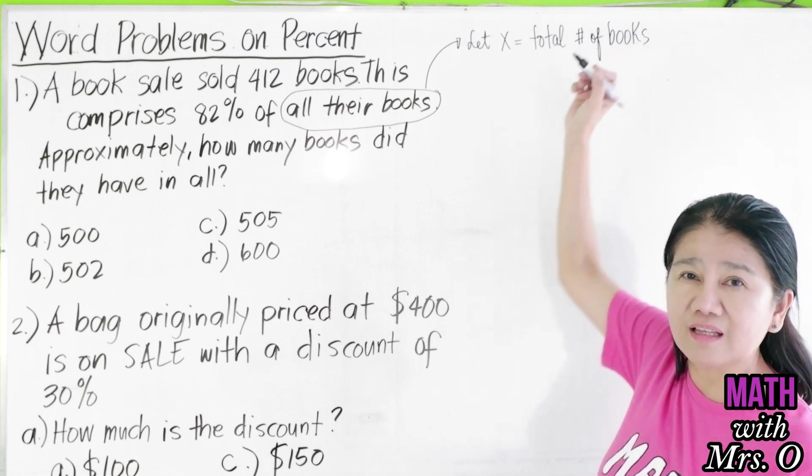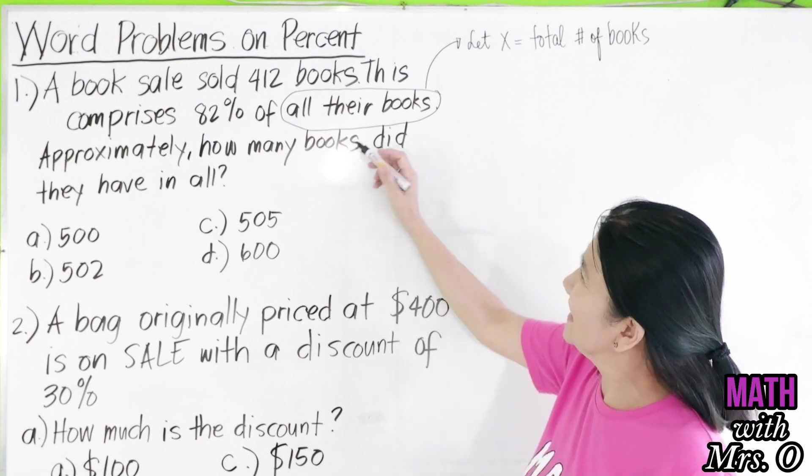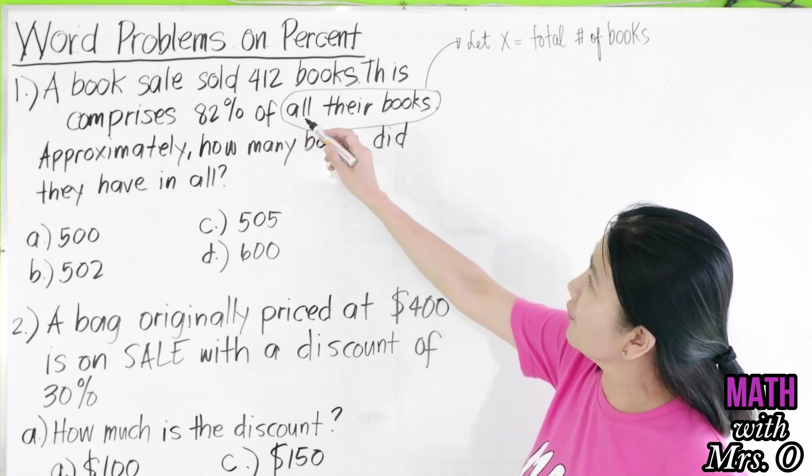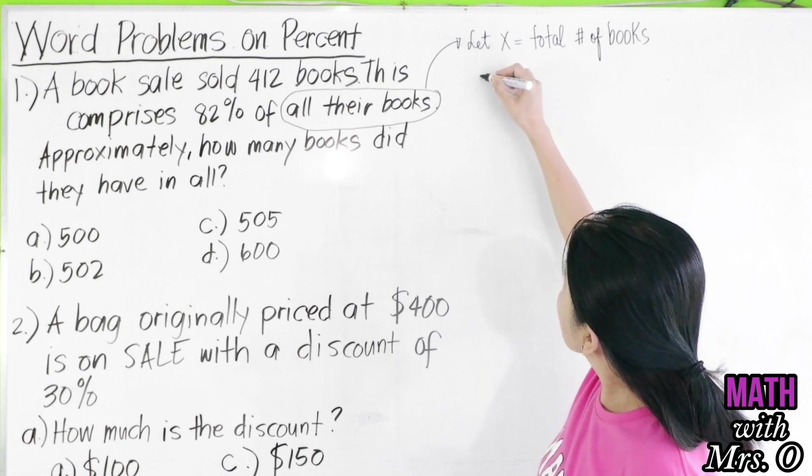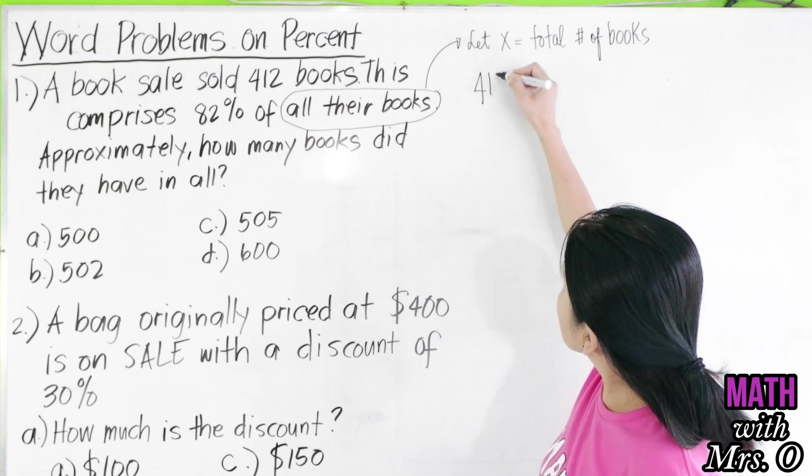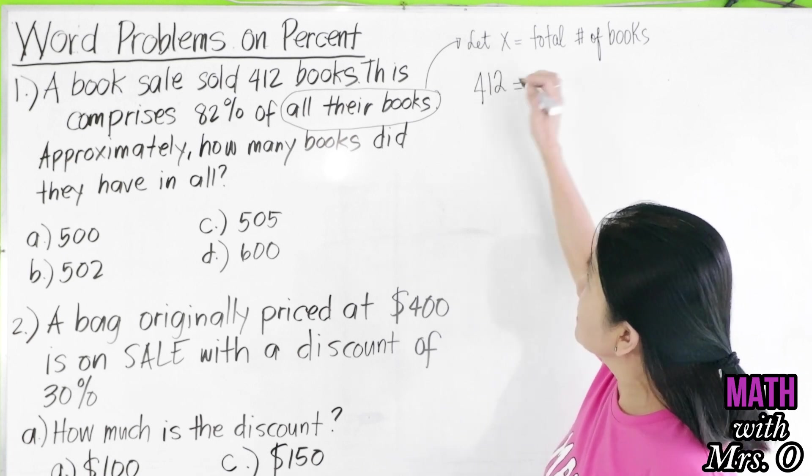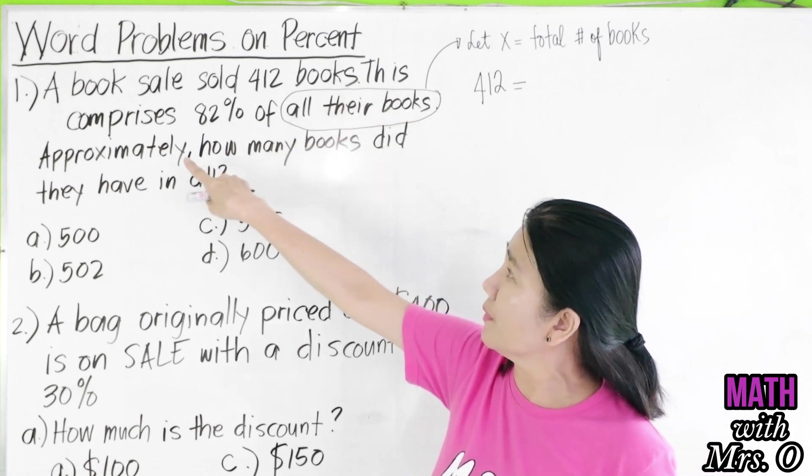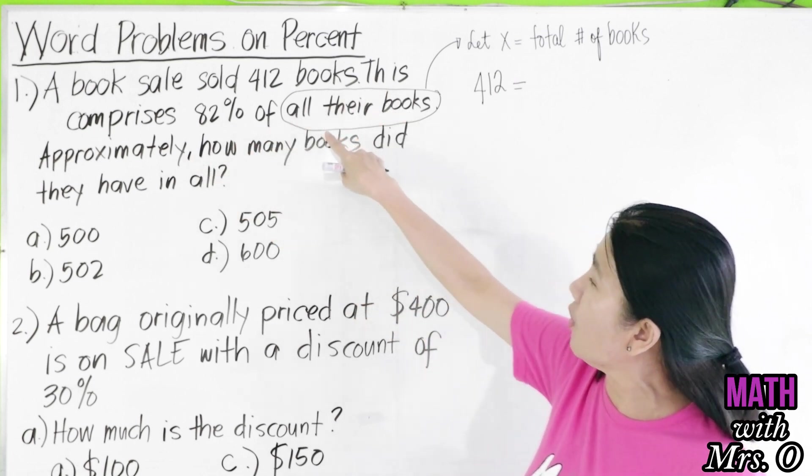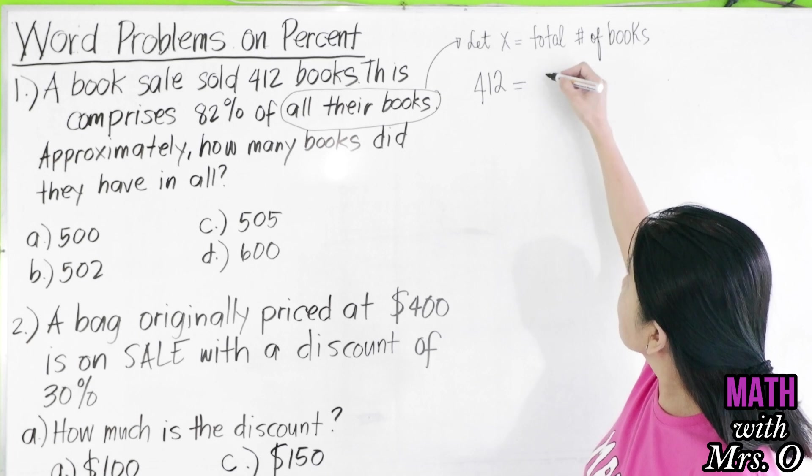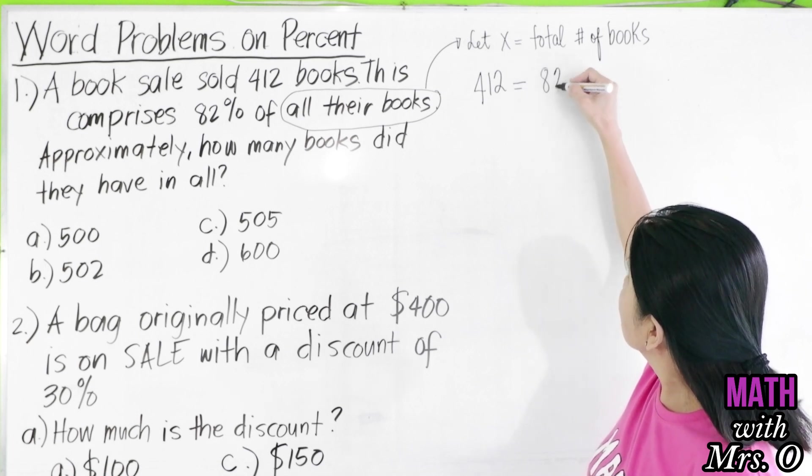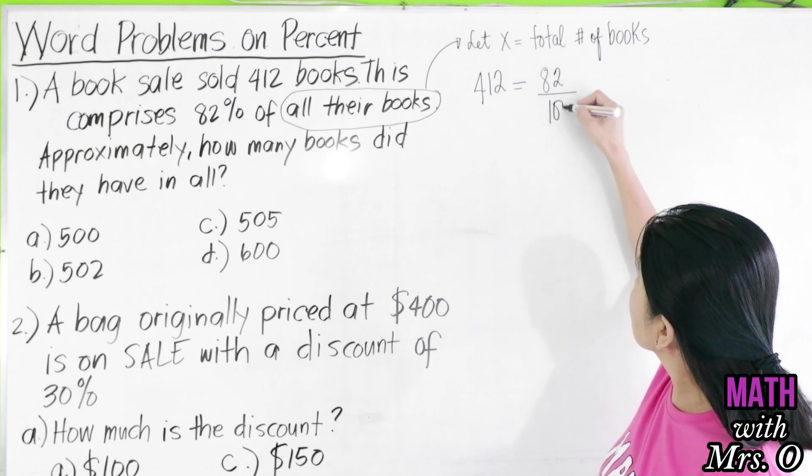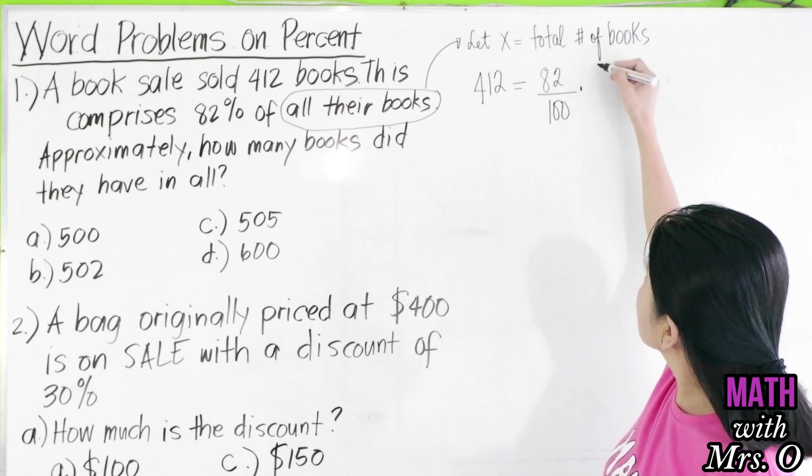This is number, not hashtag. And then we have 412 books. This 412 books, it says in the problem, comprises 82% of all their books. So, this is 82% times X.